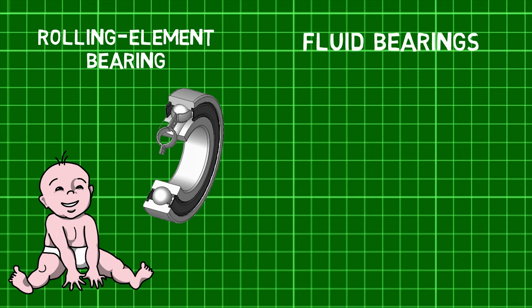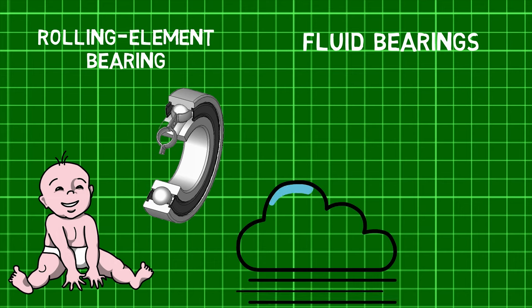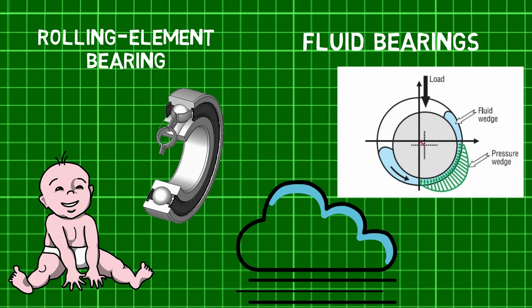Fluid bearings are bearings in which the load is solely supported by a thin layer of rapidly moving pressurized liquid or gas between the bearing surfaces. Since there is no contact between the moving parts, there is no sliding friction, allowing fluid bearings to have lower friction, wear, and vibration than many other types of bearings. A fluid bearing can be as simple as two smooth surfaces with seals to keep in the working fluid, while a conventional rolling element bearing may require many high-precision rollers with complicated shapes.